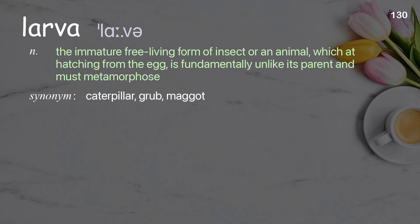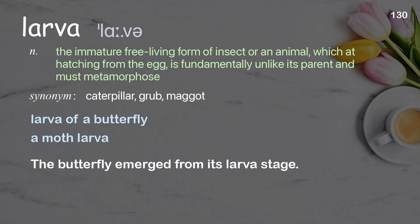Larva: the immature free-living form of an insect or an animal which has hatched from the egg, is fundamentally unlike its parent, and must metamorphose. Examples: larva of a butterfly, a moth larva. The butterfly emerged from its larva stage.